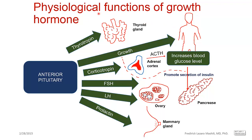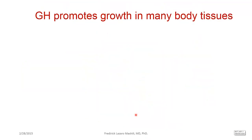When we discuss the anterior pituitary, most of the time we focus on growth hormone because it is the hormone that has a direct effect to stimulate growth. Other hormones like thyroid stimulating hormone will be discussed with the thyroid, corticotropin with the adrenal cortex, and follicle stimulating hormone and luteinizing hormone when we discuss the reproductive system.